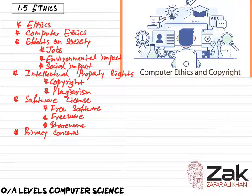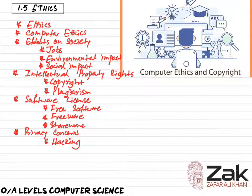Regarding privacy concerns, the first concern is hacking. It is an unlawful intrusion into a computer or a network. A hacker can intrude through the security levels of a computer system or network and can acquire unauthorized access to another's computer.